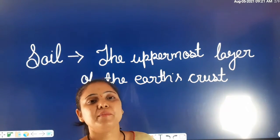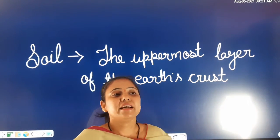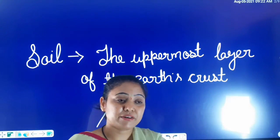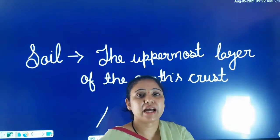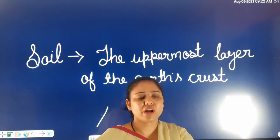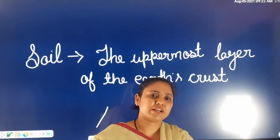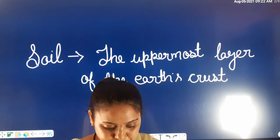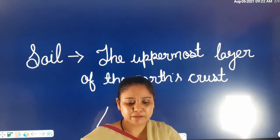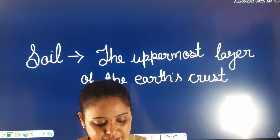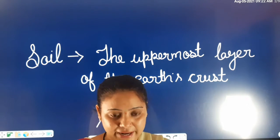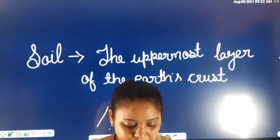The soil contains organic matter. There are many minerals and particles. If you look at the soil, you can see different types of components. It consists of a layer of mineral particles and a layer of remains of dead and decayed animals and plant matter.